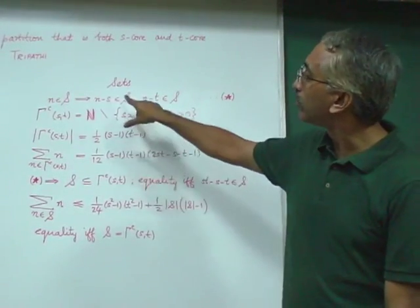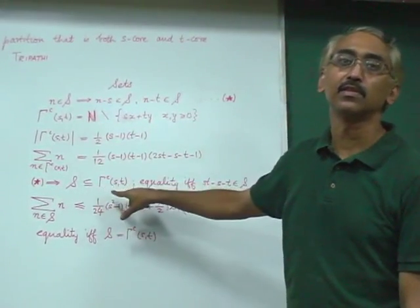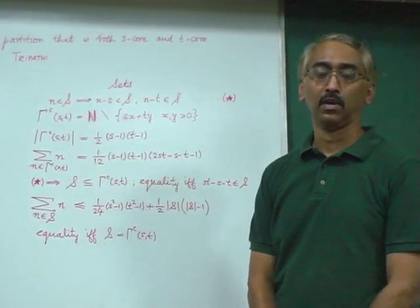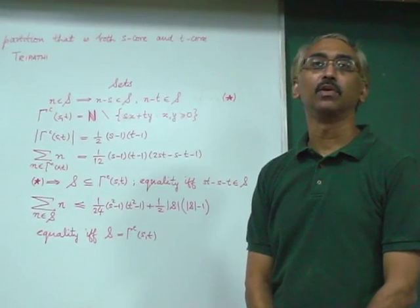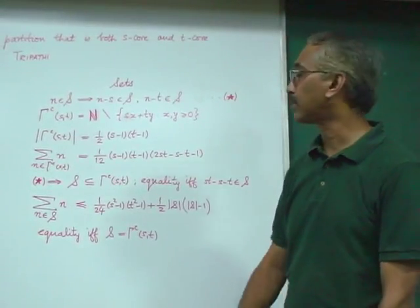We first show that for any set S with property St, we must have that S is a subset of gamma complement, and that S will be equal to gamma complement precisely when St-S-T is an S.